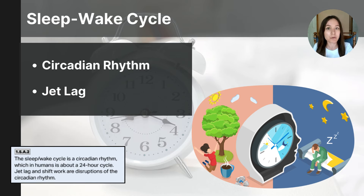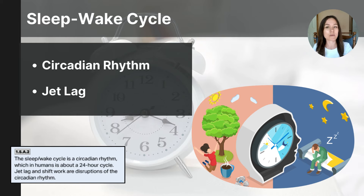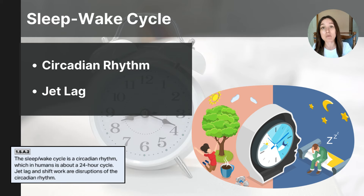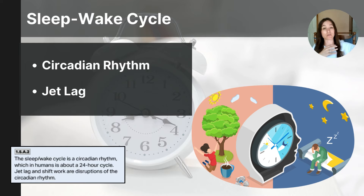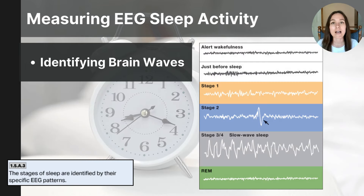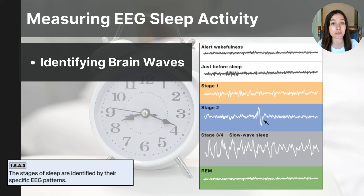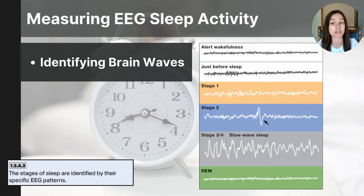Jet lag is a temporary sleep disorder that occurs when a person's internal body clock is out of sync with the time zone they've traveled to. It tends to be more intense the farther the time zone is or the more time zones you cross. Researchers can measure brain waves through an EEG, and thanks to thousands of volunteers who have participated in sleep studies over the years, researchers have been able to identify clear patterns in brain activity throughout different stages of sleep.